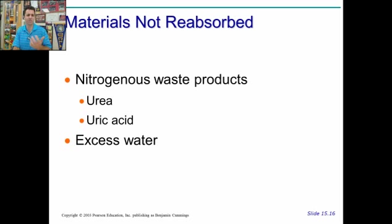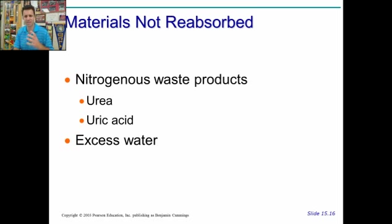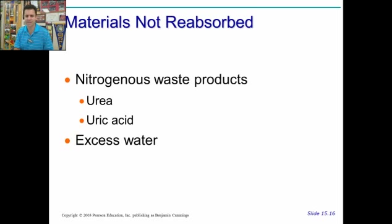Some things you don't want to reabsorb — these include the main wastes: urea and uric acid. You don't reabsorb a lot of uric acid because it's very thick, viscous, and toxic — uric acid is actually what bird droppings are, and it's very acidic. Most of what you produce is urea. You're also not going to reabsorb any excess water — if you drink a lot of water, you're going to pee some out.